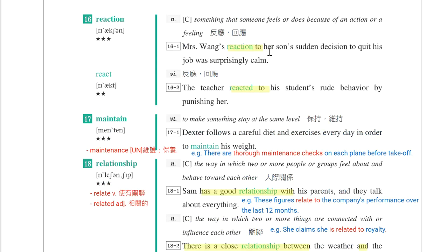动词去掉-ion变成react，反应、回应。The teacher reacted to his student's rude behavior by punishing her。老师对于学生没有礼貌的行为就是处罚他们。React to something，他当动词的collocation也是跟名词一样，后面加to。